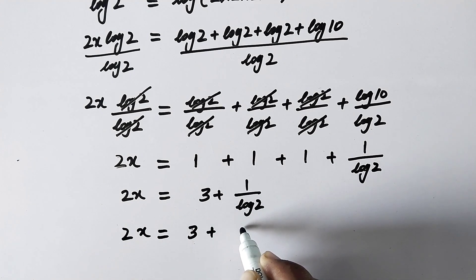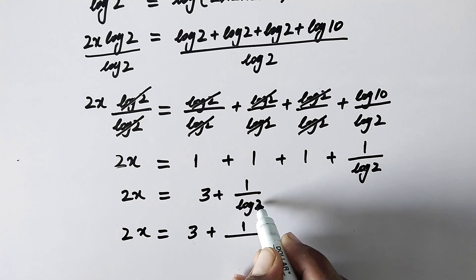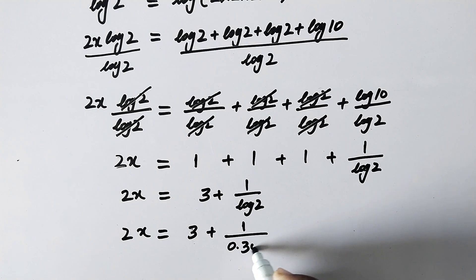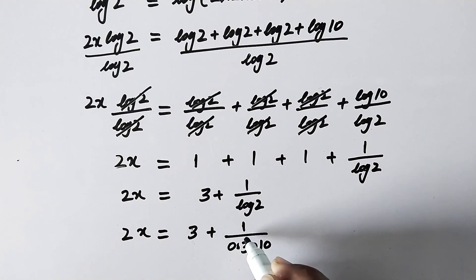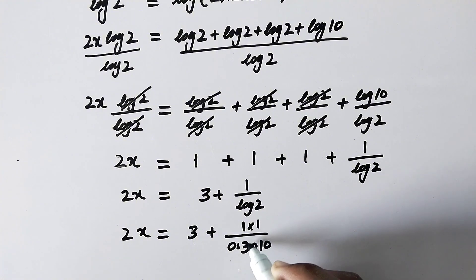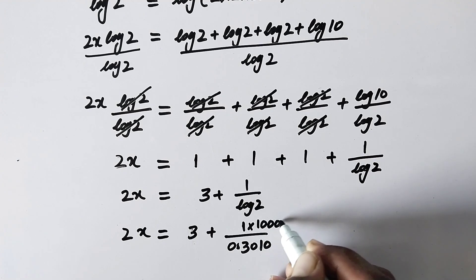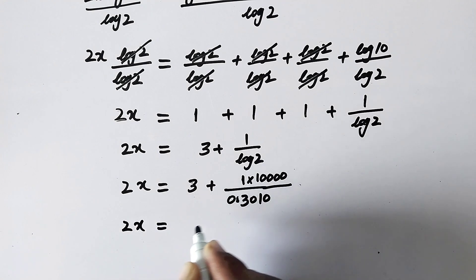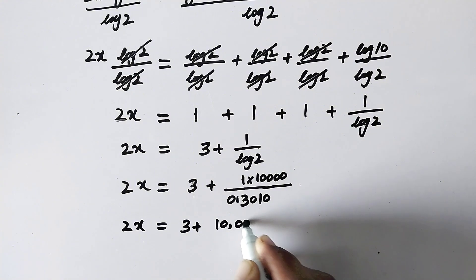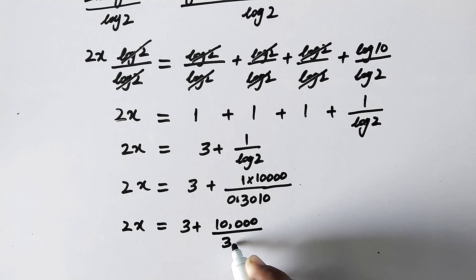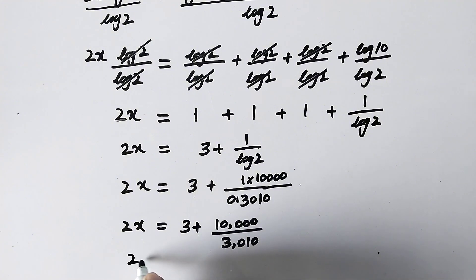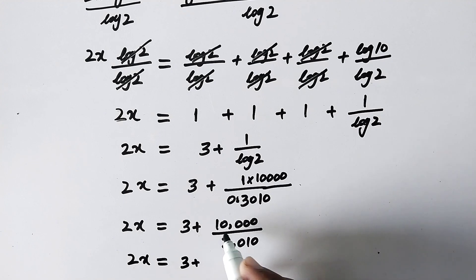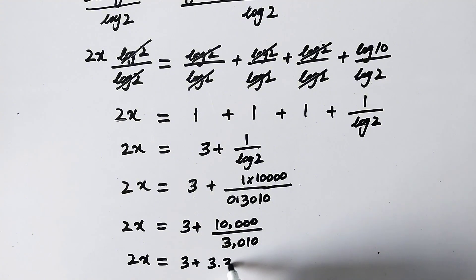So now 2x is equal to 3 plus 1 over log of 2. As we know, the value of log of 2 is equal to 0.3010. Substituting, 2x is equal to 3 plus 10,000 over 3,010, which gives 2x equal to 3 plus approximately 3.32, so 2x equals 6.32.